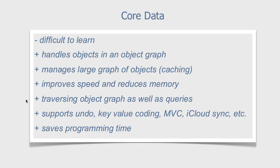The object graph makes it possible to traverse that graph, giving us a very powerful way to access the data of the objects. But it is also possible to make queries like SQL does, giving us the best of both worlds. Using Core Data, we get many benefits for free: support for Undo, Redo, Key Value Coding, Model View Controller Support, Binding, iCloud Sync, and so on. And that saves programming time.